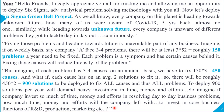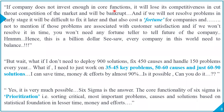To deploy 900 solutions per year, we demand heavy investment in time, money, and efforts. Imagine if a company invests so much in resolving day-to-day business problems — how much time, money, and effort will be left to invest in core business functions like R&D, production, and marketing? If the company does not invest enough in core functions, it will lose competitiveness and could go bankrupt. If we don't resolve problems early, it will be difficult and costly to fix them later. Hence, this is the billion-dollar seesaw every company needs to balance.